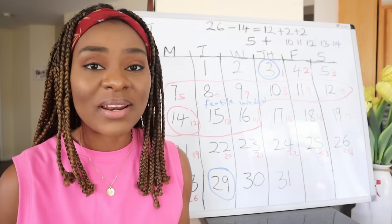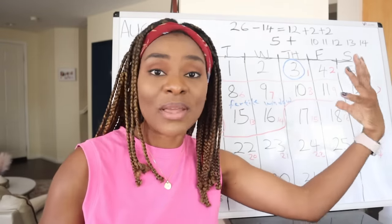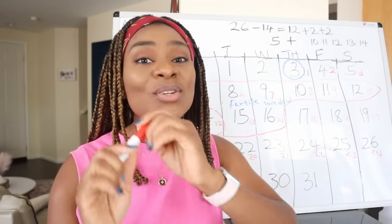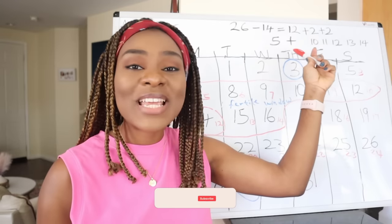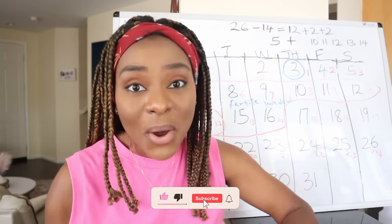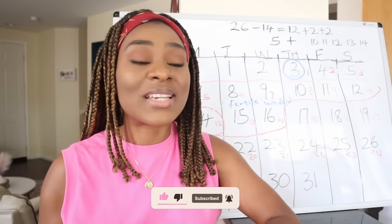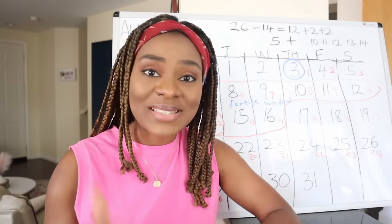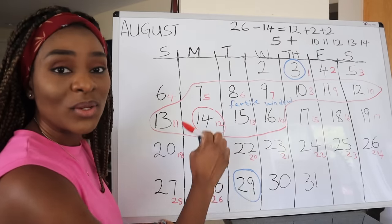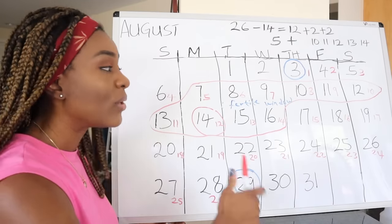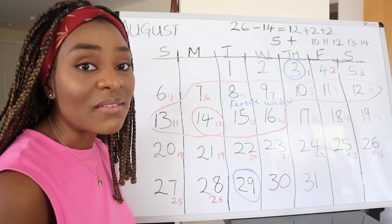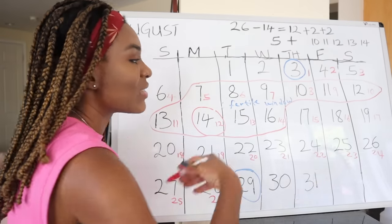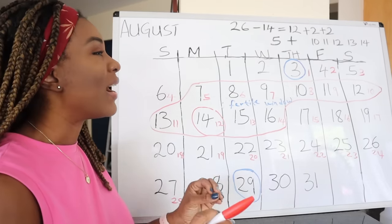For women trying to avoid pregnancy using the natural method, you want to abstain from unprotected sex five days before your predicted fertile window to be safe. Once you calculate your fertile window and circle it on your calendar, any day that does not fall within that fertile window is your safe day. During safe days you are free to have unprotected sex with minimal chances of conceiving.